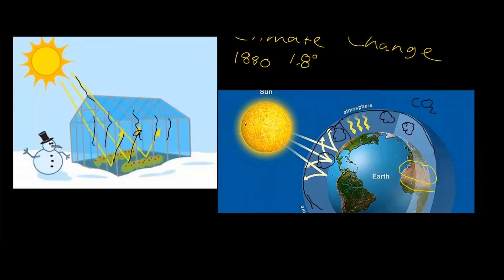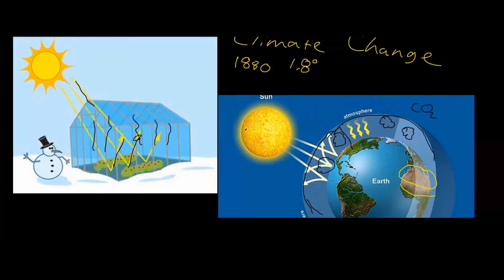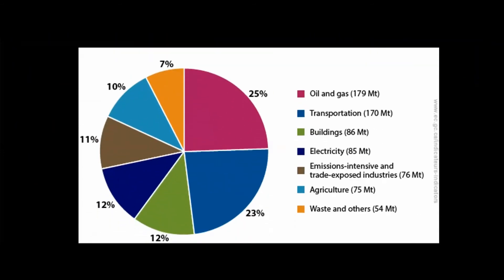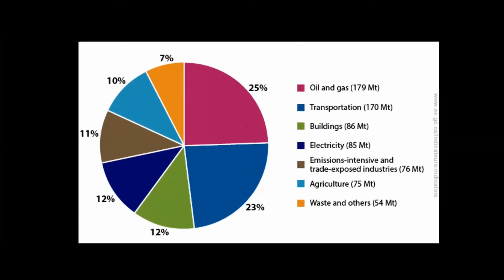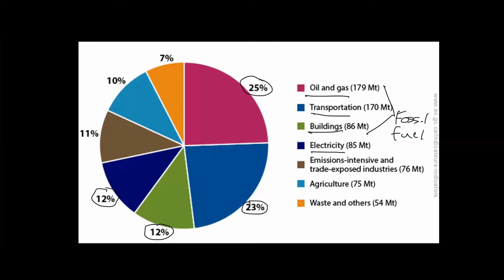We also produce some when we burn anything, or we have wasted gas, or we create gas from dump sites. Looking at overall production, you can see how it's really, really scary. Out of all the greenhouse gases that are produced, here's oil, there's transportation, buildings, and electricity — these are the major ones. We have 25% for oil and gas, 23% in transportation, 12% in buildings, and 12% in electricity. Those are all fossil fuels, and we produce those by burning either coal, natural gas, or oil. As you see, it's a huge problem.